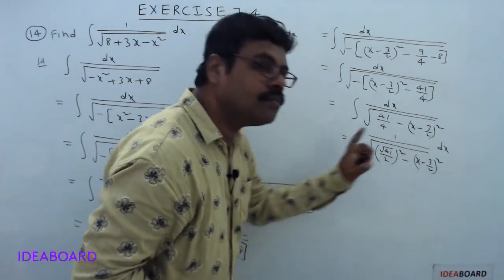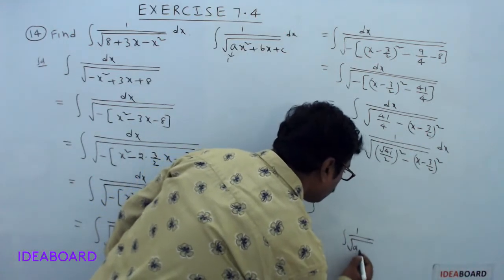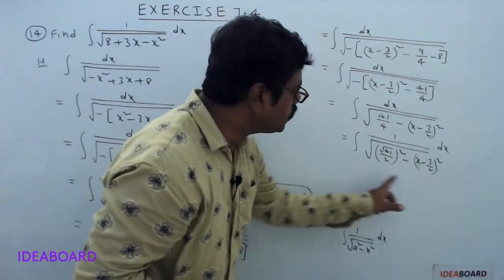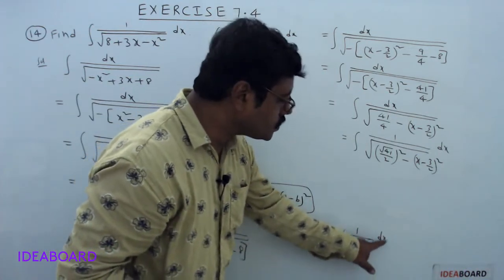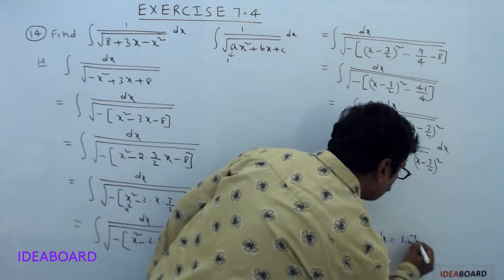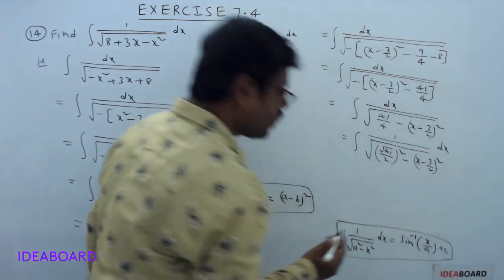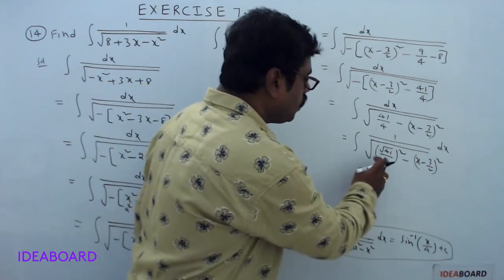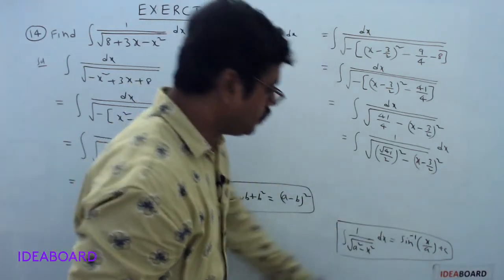This entire term is of the form integral 1 divided by square root of a² minus x² dx. What is its formula? sin inverse of x/a plus constant C. Now use this formula on this term. Here, in place of a, √41/2 will be there. In place of x, (x minus 3/2) will be there.